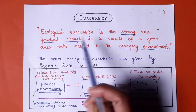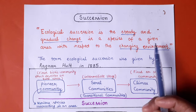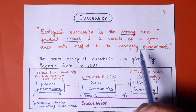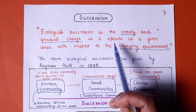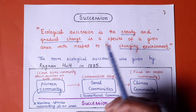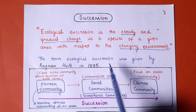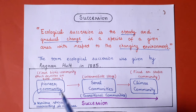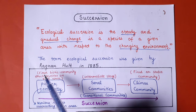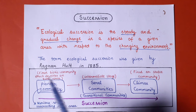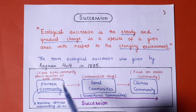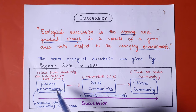Ecological succession is the steady and gradual change in the species of a given area with respect to changing environment. As the environment goes on changing, the species present within the area also go on changing. The term ecological succession was given by Ragnar Hult in 1885. The pioneer community is the first biotic community that develops on bare area — as in hydrosere, the phytoplanktons were the pioneer community. A community includes various species interacting in an area.